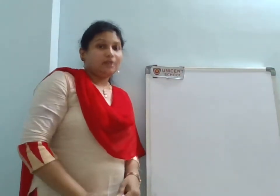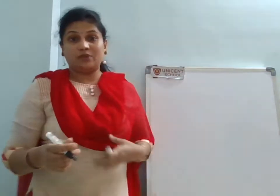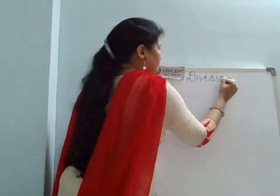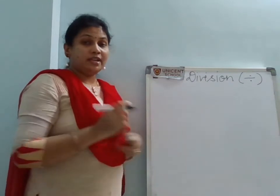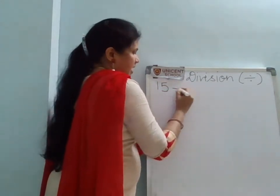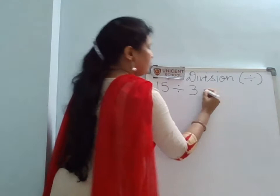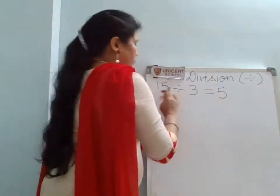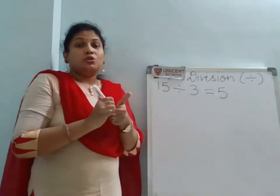So what we are doing here is distributing the chocolates equally. When we distribute objects equally, that is called division. The symbol for division is ÷. So let's write the division sentence: I had 15 chocolates, divided among 3 friends, and each got 5. So 15 divided by 3 is equal to 5.